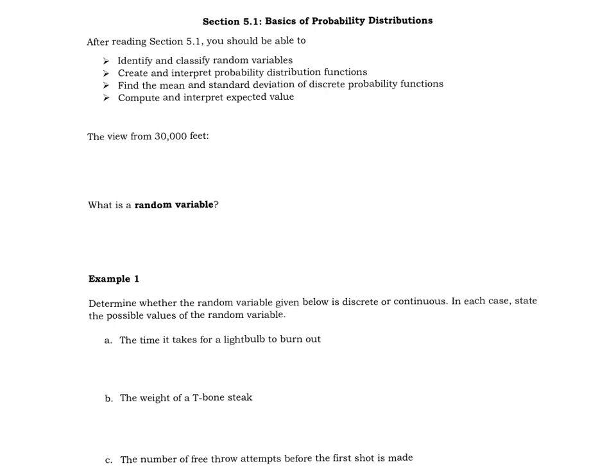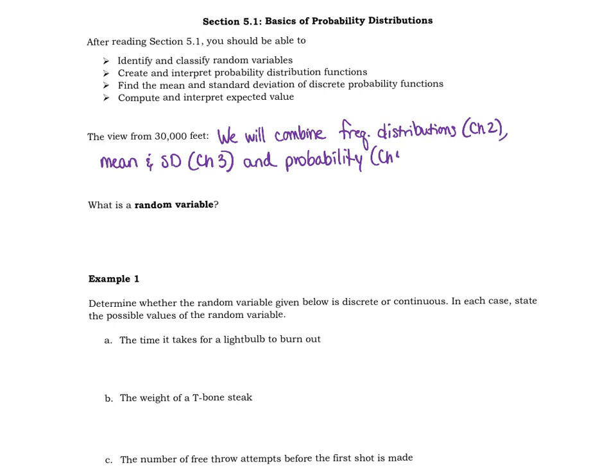Let me give you that up-high view here. In section 5-1 particularly, we will be combining frequency distributions, which we did in chapter 2, mean and standard deviation, which we looked at in chapter 3, and probability, which we did in chapter 4. Welcome to my real life. All right, so we're going to be combining those three things together. Let's start out with one definition and then some review of discrete and continuous, just to make sure we remember those terms from earlier in the course.